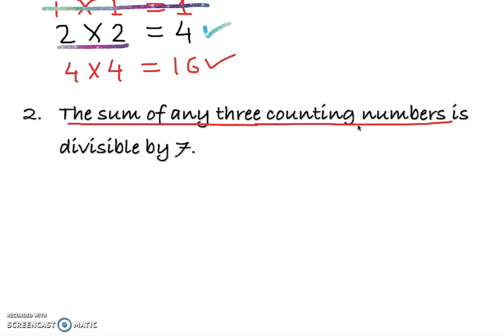This time we need three counting numbers. I'm going to do an easy one: 1, 2, 3, which is equal to 6. Is it divisible by 7? No, it's not divisible by 7.